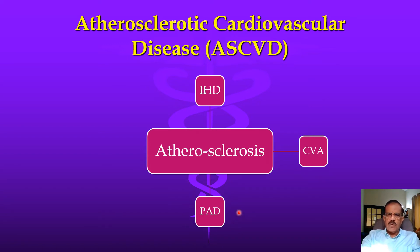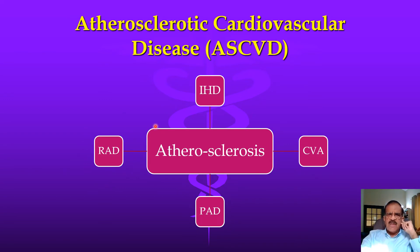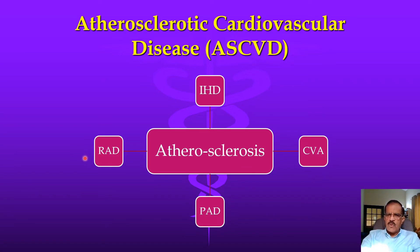Renal artery disease is not traditionally classified as atherosclerotic cardiovascular disease, but we now know that atheroma can affect any vessel, including renal vessels. If a hypertensive person suddenly becomes refractory to treatment, you should suspect atherosclerotic narrowing of the renal artery.